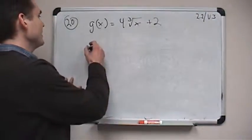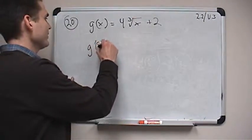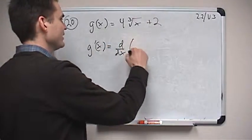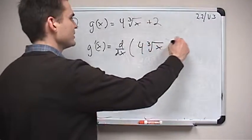Okay, another problem computing a derivative. We've got a function g of x and we want to find its derivative g prime of x. So we're going to take the derivative of 4 times the cube root of x plus 2.